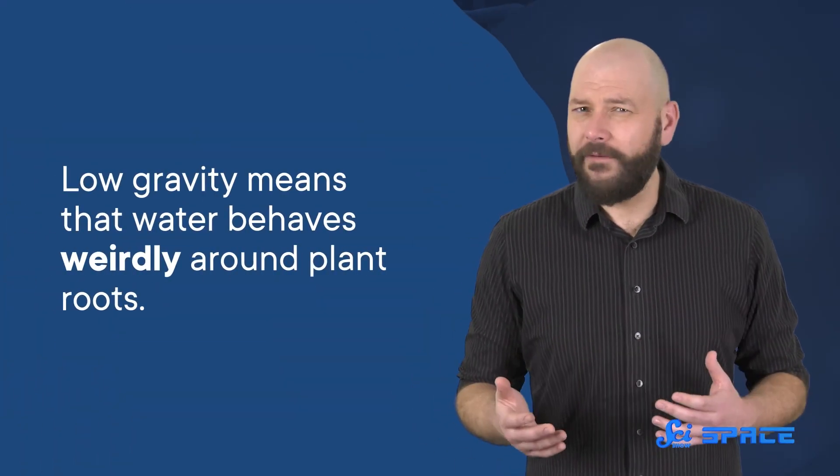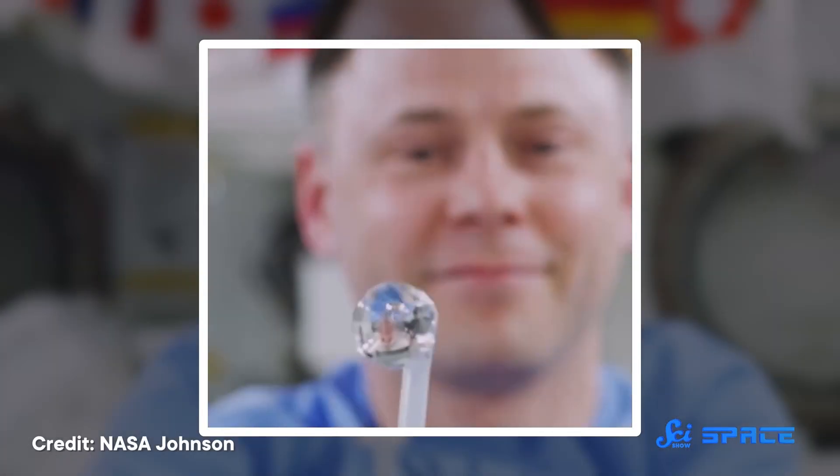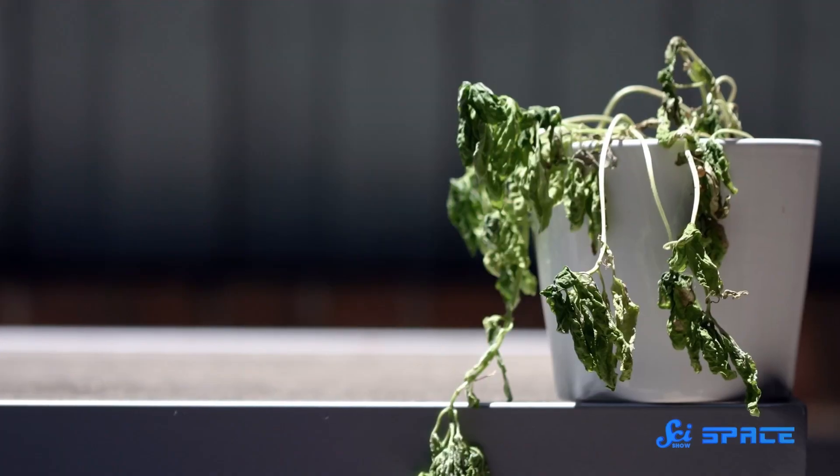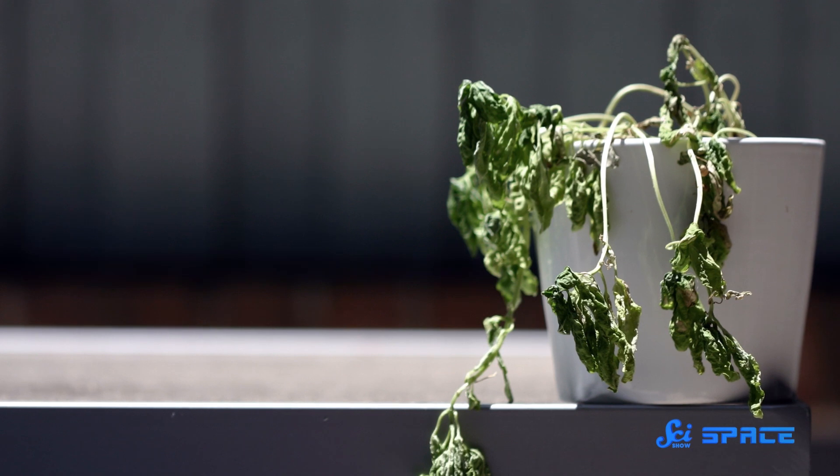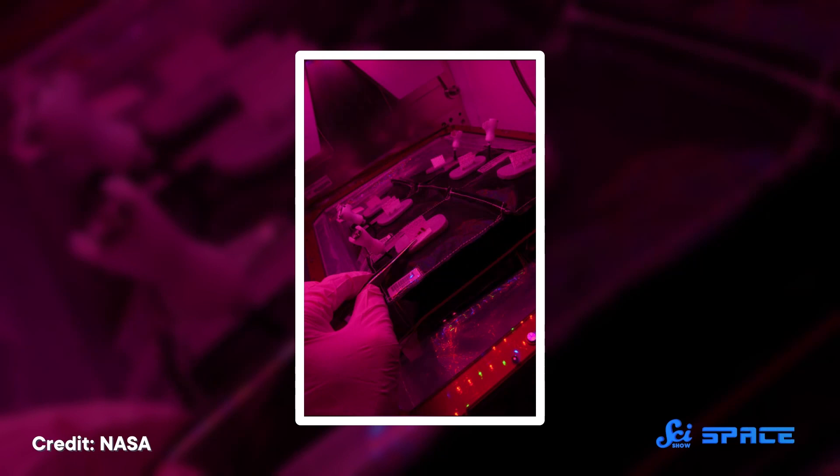But the lack of gravity can wreak other kinds of havoc on plants. Low gravity means that water behaves weirdly around plant roots. In microgravity, it forms bubbles which can surround the roots. And as you know if you've ever overwatered a houseplant, being too wet is bad for them. That's why plants on the ISS grow in little pillows of clay, where the gaps in the clay trap just enough water and a little bit of air so that the roots can absorb the H2O without being waterlogged.